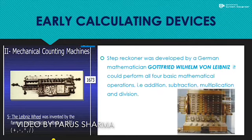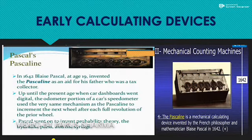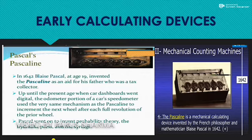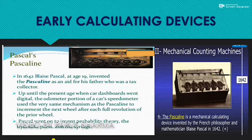Then we have the Pascaline. Every instrument was named after the person who made it. The Pascaline was invented in 1642 by a French mathematician named Blaise Pascal. It was the first mechanical computing machine, known as the Pascaline. It consists of a box with movable gears that could add, subtract, multiply, and divide numbers very easily.